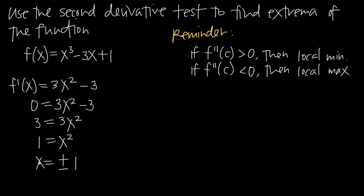To use the second derivative test to see whether either critical point represents a local max or local min, we plug them into the second derivative. So we find f double prime of x by taking the derivative of 3x squared minus 3, which gives 6x. This is our second derivative.